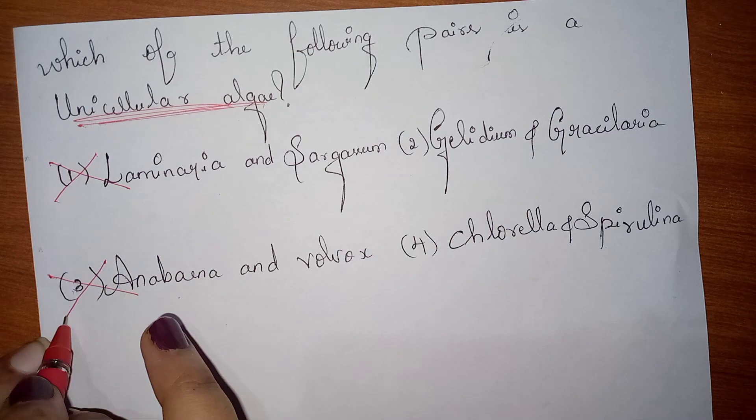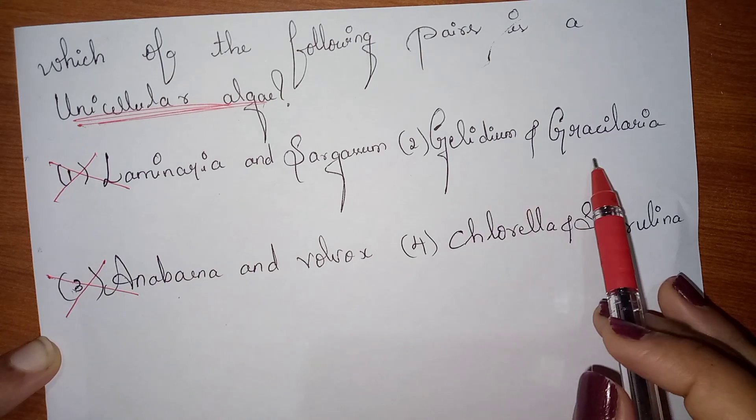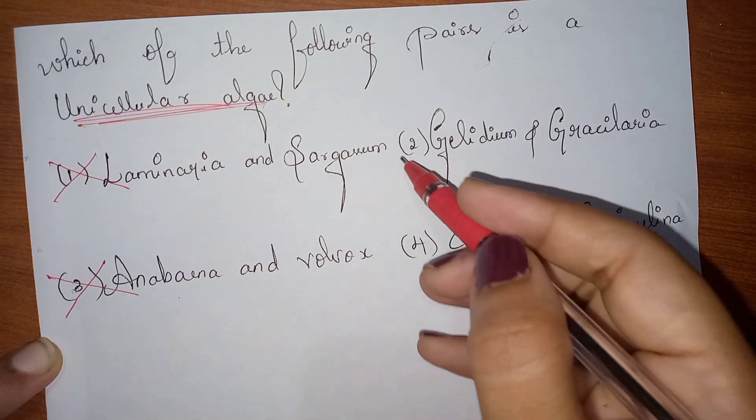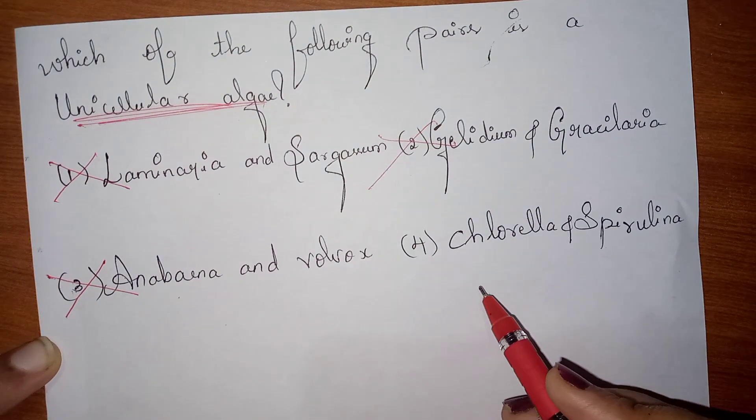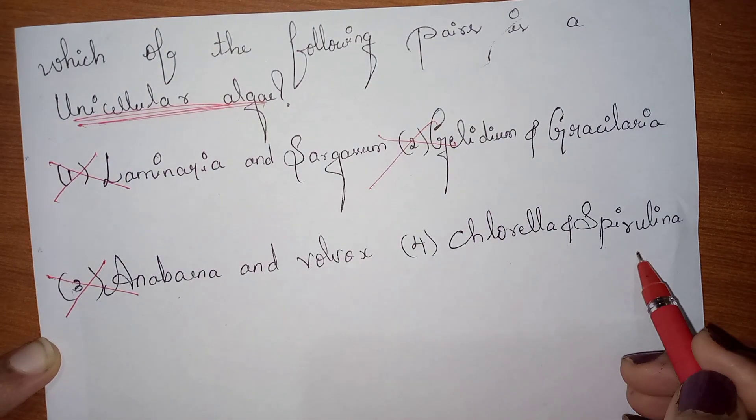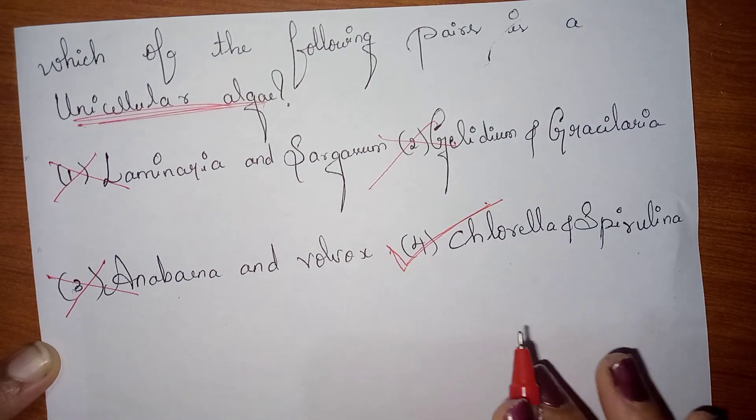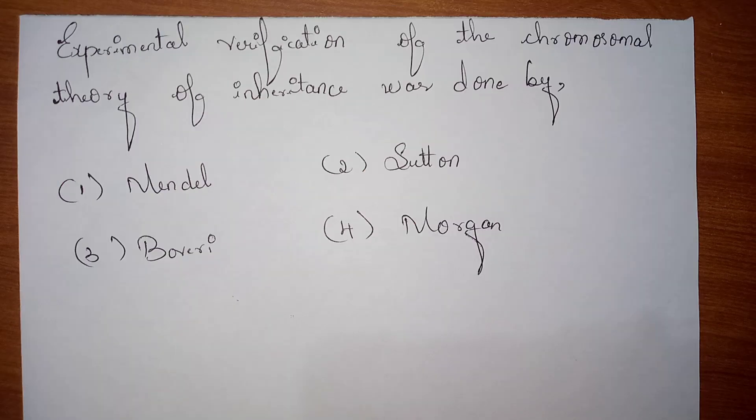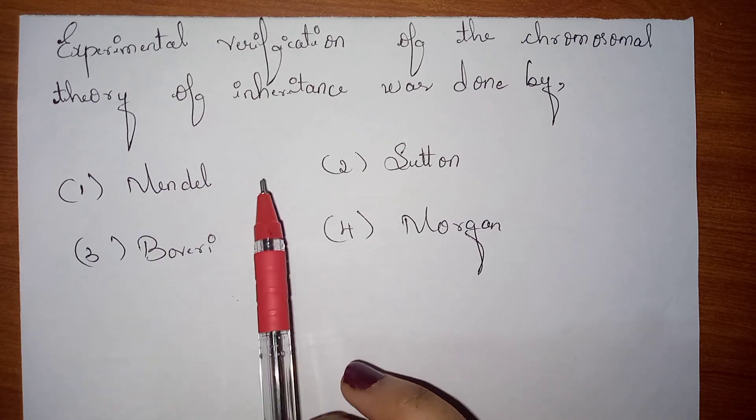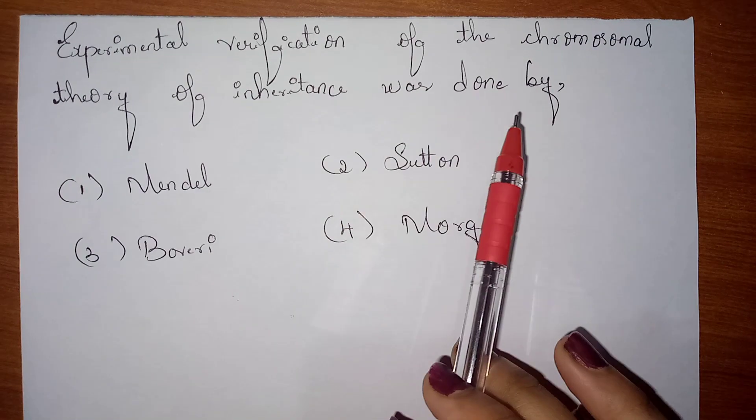Next, Anabena and Volvox, these two are multicellular, so this is not our answer. Gelidium and Gracilaria, this is also multicellular. The answer is Chlorella and Spirulina. This is a unicellular algae, so this is the right answer.